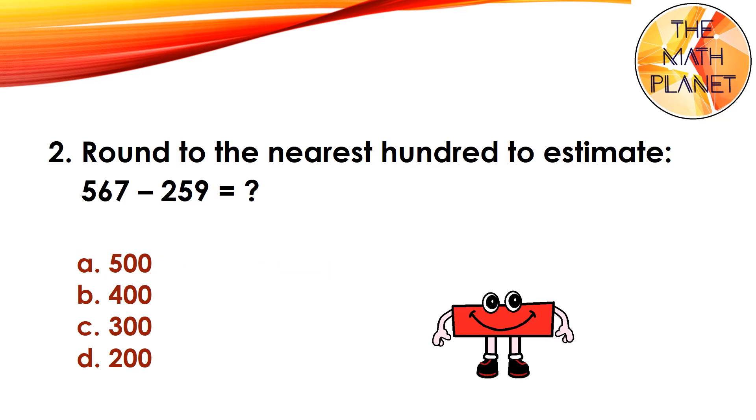Question 2. Round to the nearest hundred to estimate 567 minus 259. The correct answer is C because 600 minus 300 equals 300.